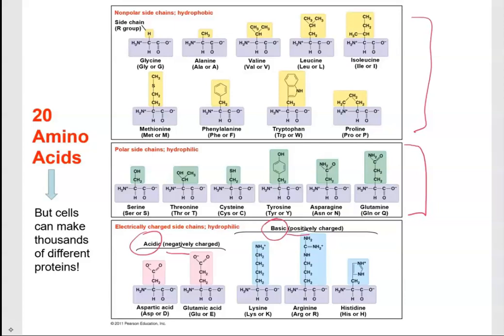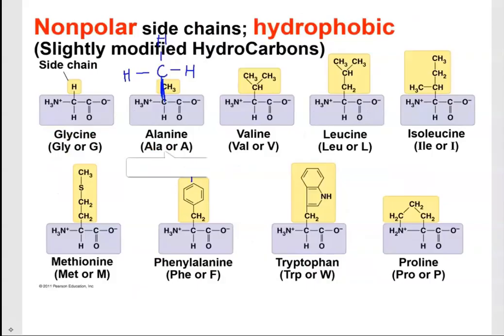These R groups are going to interact to produce a specific 3D shape in the protein. Let's look at alanine as an example. The purple part is the backbone — the basic skeleton of the amino acid — which is the same for all amino acids. The R group is different: alanine has a CH3 group. Remember that carbon wants to have four bonds, so you'll always have hydrogens filling those bonds.